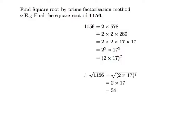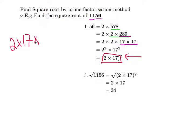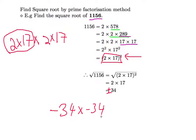Now let's use prime factorization to find the square root of 1156. We break it down: 1156 → 578 → 289 → and so on. Once we have all prime factors, we can see two sets of (2 × 17). When we square root, we take one set, so the answer is 2 × 17 = ±34. You can verify: (−34) × (−34) = 1156.